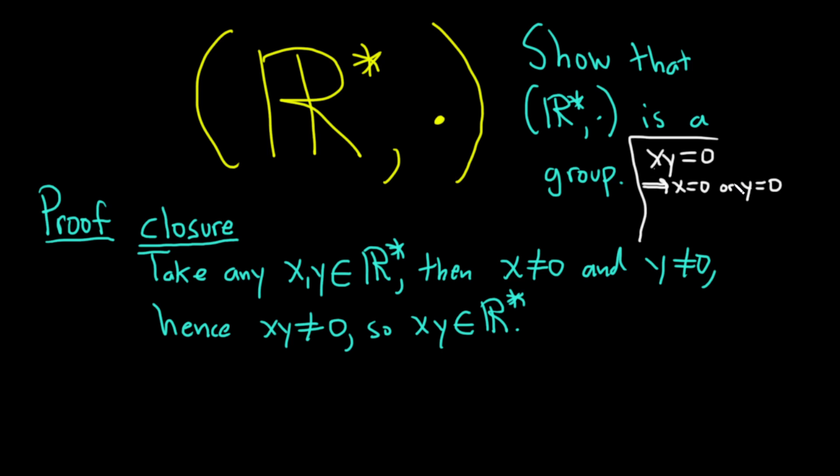Whenever you have a product equal to zero like this, you have x equals zero or y equals zero. So the contrapositive of the statement—if this is false, then this is false—it would be: if x is not zero and y is not zero, then xy is not zero. Using basic mathematical logic, if you negate this, that implies the negation of this. This is called the contrapositive. And that's exactly what we used here. I just wanted to mention that.